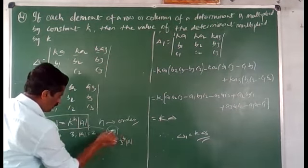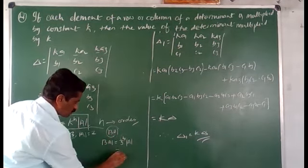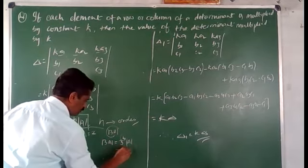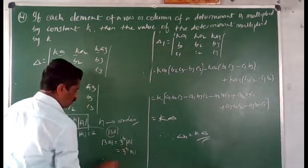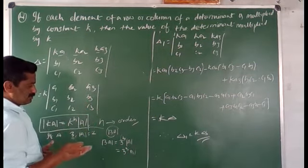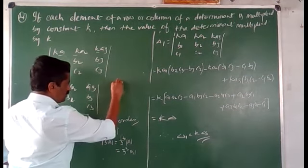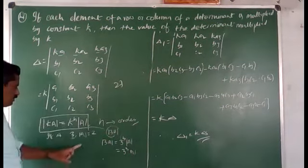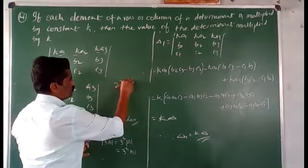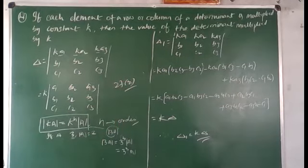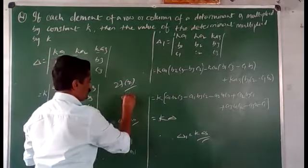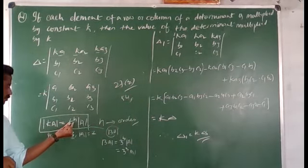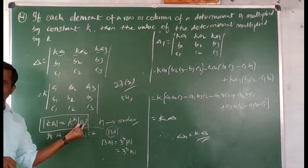Here, what is the value of N? We have 3. Therefore that equals 3 to the power of 3 into determinant of A, which is 27 into determinant of A. The determinant of A is 2, so 27 into 2 gives 54. Remember: determinant of kA equals k to the power of N into determinant of A.